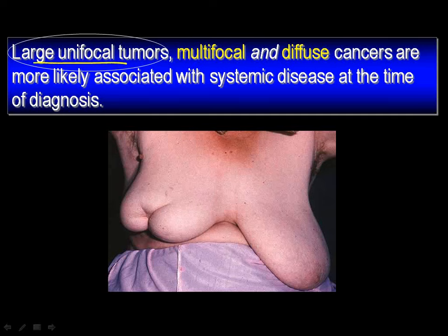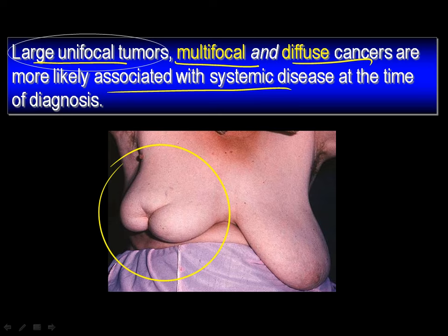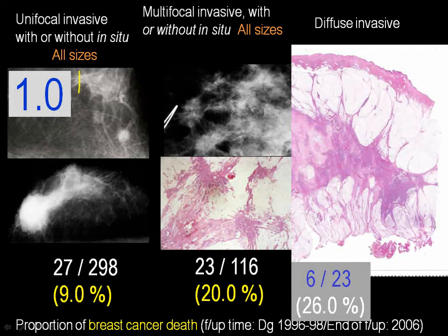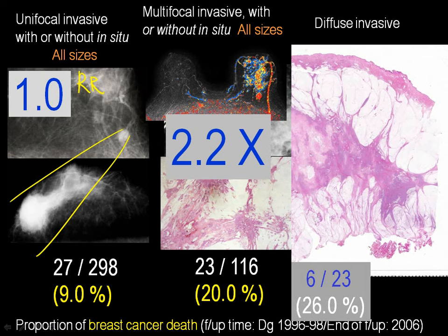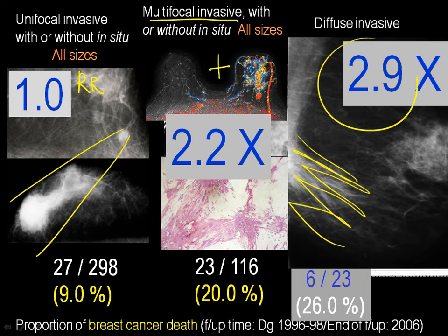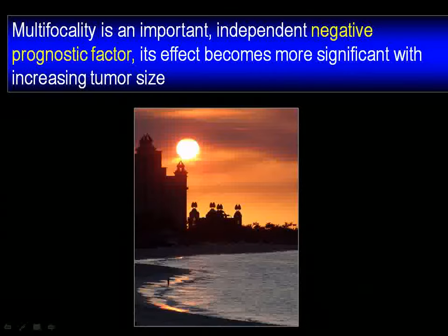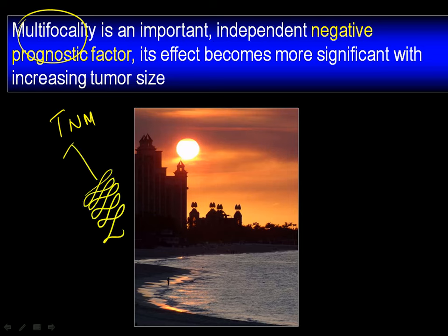Large unifocal, multifocal, and diffuse breast cancers are most likely systemic at the time of diagnosis and treatment, and it's very difficult to control this disease. The fatality rate is 2.2 times higher in multifocal invasive cancers with or without in situ, and the worst is three times higher fatality. Unfortunately, the TNM classification does not recognize multifocality or request description of the diffuse nature of breast cancer.